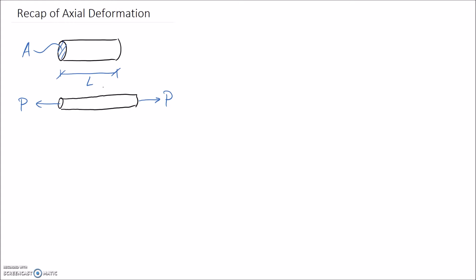I'm going to put this member into tension, so I've applied a force P here and a P here to pull it on either end. What I would expect is that, as a result, the length of this member is going to increase. This extra little piece is the change in length, and I'm going to call this delta. You can think about it as the axial deformation — it's the same thing.